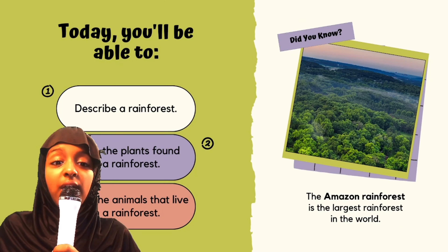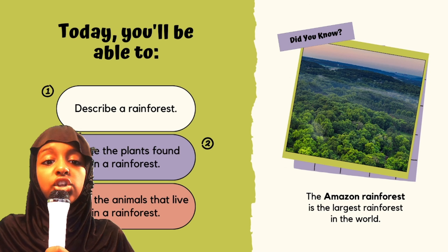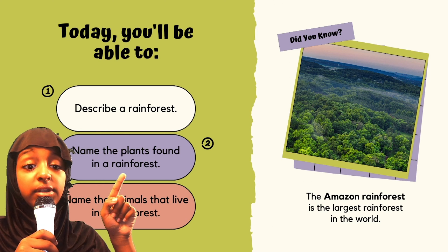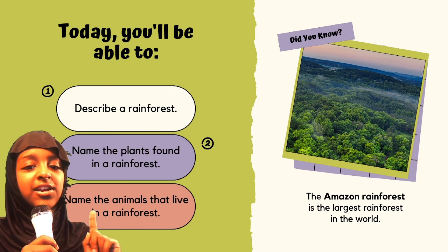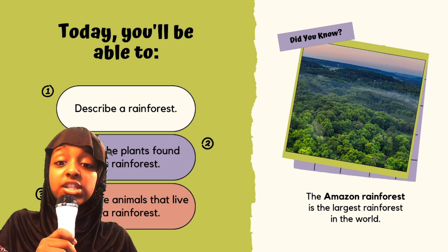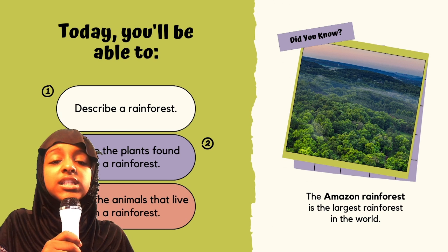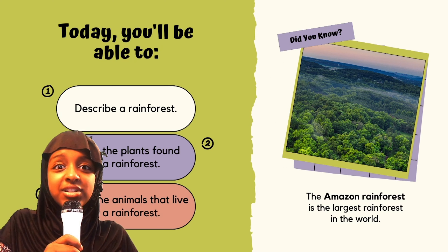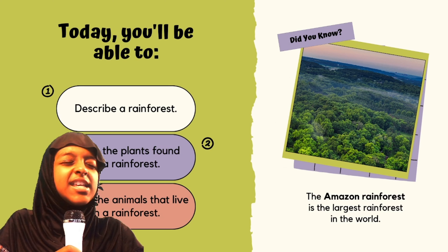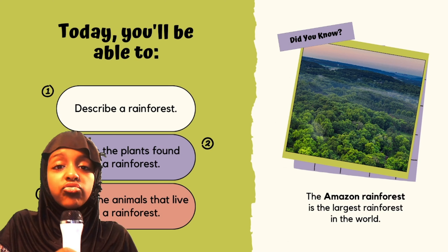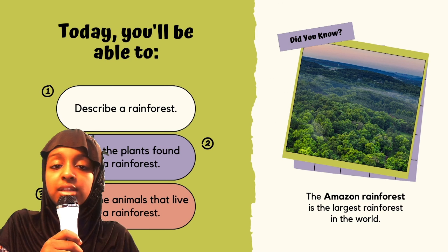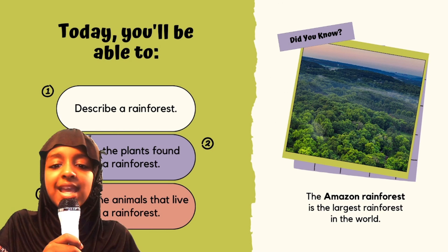Now, why don't we move on? Today you'll be able to describe a rainforest, name the plants found in a rainforest, and name the animals that live in a rainforest. I have a fun fact for you guys. Did you guys know that the Amazon rainforest is the largest rainforest in the world? The Amazon rainforest is the largest rainforest, which means there's a lot of animals, there's a lot of trees and plants — all of those are in the Amazon rainforest.